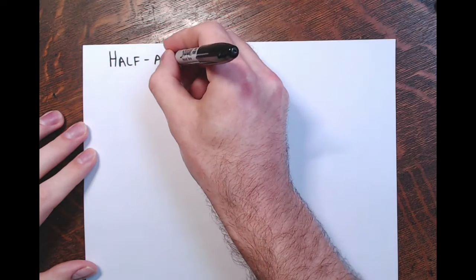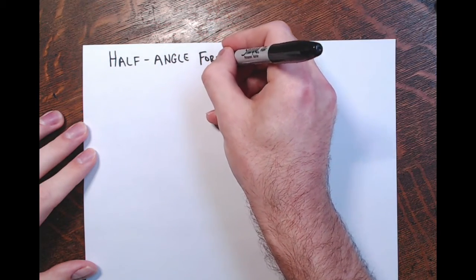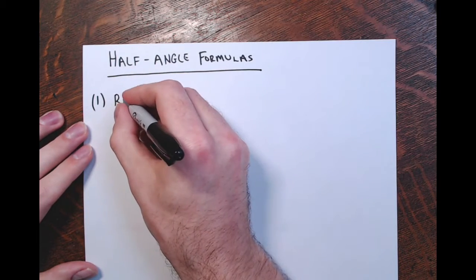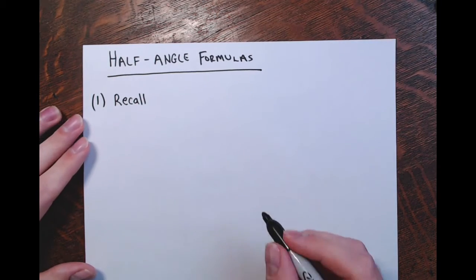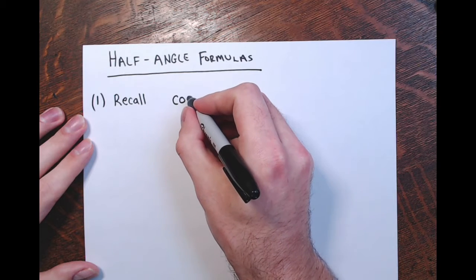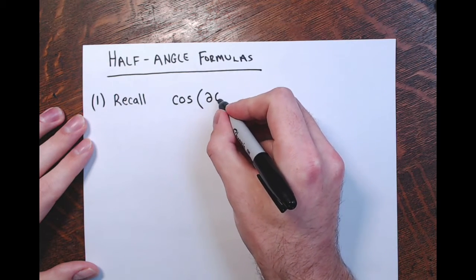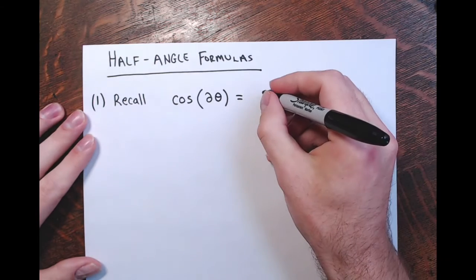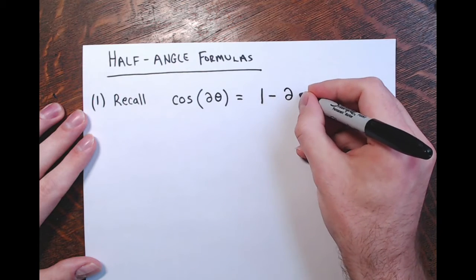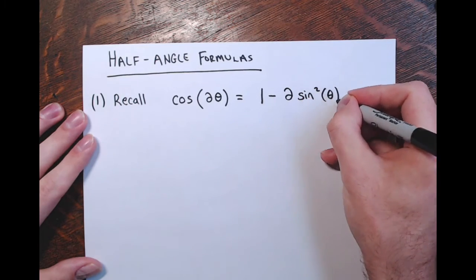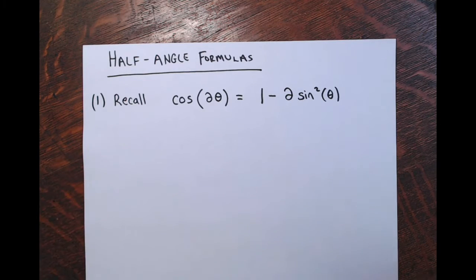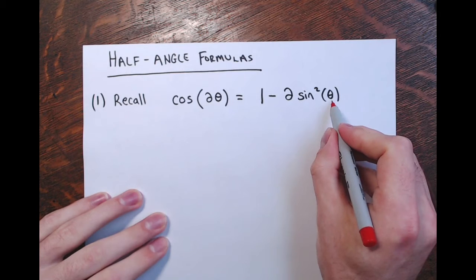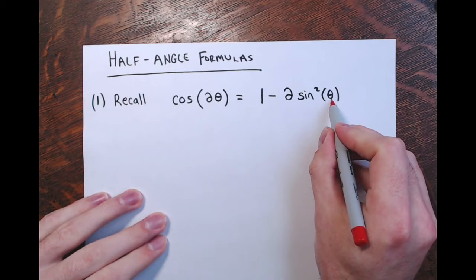We're developing the half angle formulas. First, for the sine. To develop the half angle formula for sine, you have to recall one of the versions of the double angle formula for cosine. The cosine of double an angle — one of those versions involved just sine — was one minus two times sine squared theta. This angle in here is double this angle, which means this angle is half that angle.